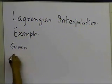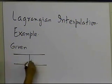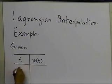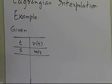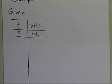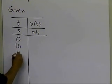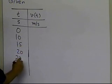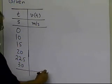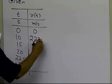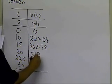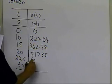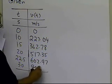We are given the following data points for the upward velocity of a rocket as a function of time. Time is given in seconds, velocity is given in meters per second. The times given are 0, 10, 15, 20, 22.5, and 30, and the corresponding velocities are 0, 227.04, 362.78, 517.35, 602.97, and 901.67.